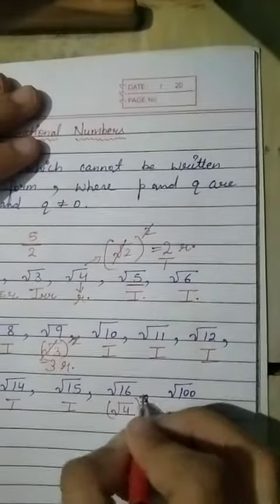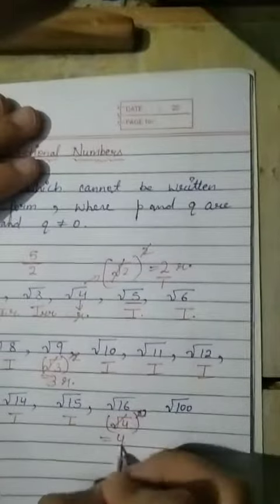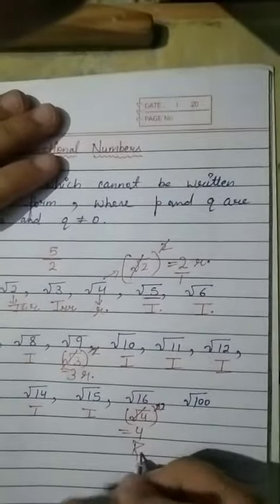And √16 we can do, √4 whole square. The square cancels the root. So, you get 4, which is a rational number.